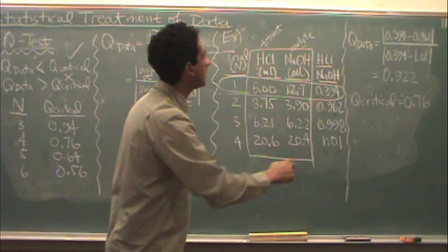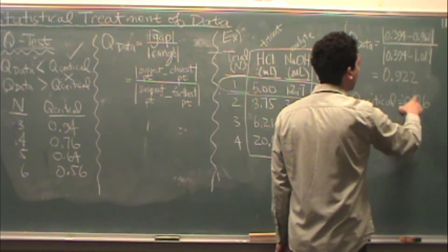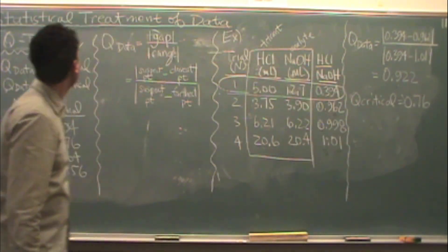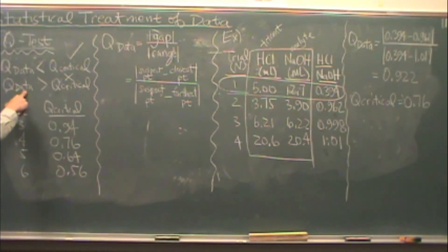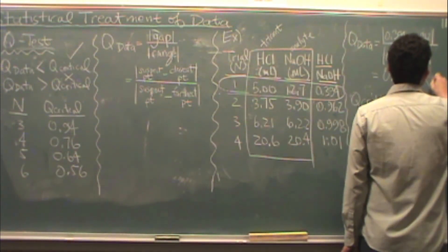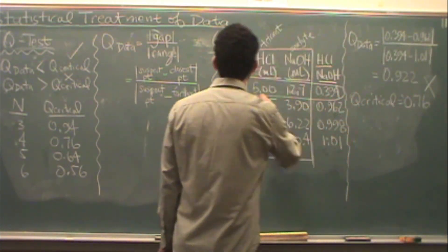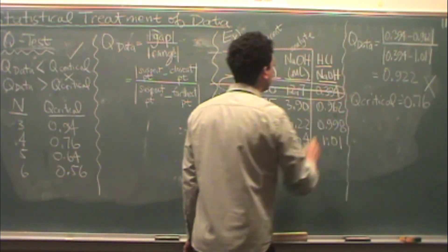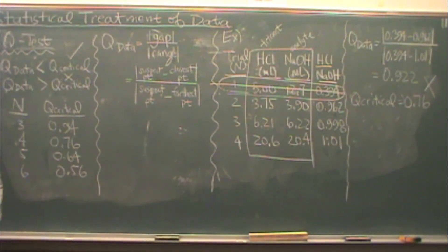In this case you can see that Q data is numerically larger than Q critical. When Q data is numerically larger than Q critical that suspect point is actually a bad data point. So this is not a good data point and I am going to not use that first trial in the rest of my analysis.